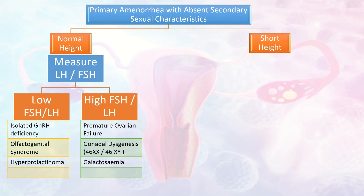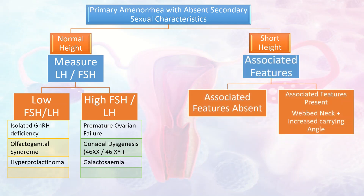In the group of patients with short height, we look for associated features. In some patients, associated features may be absent, while in another group, certain features may be present, such as webbed neck and increased carrying angle.